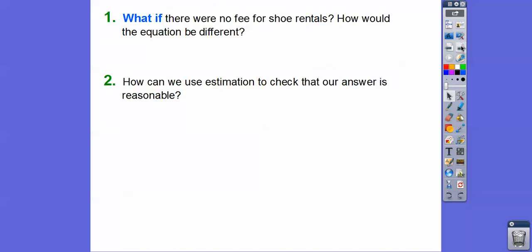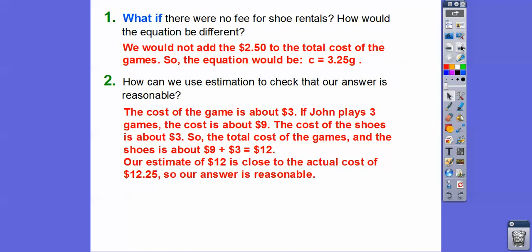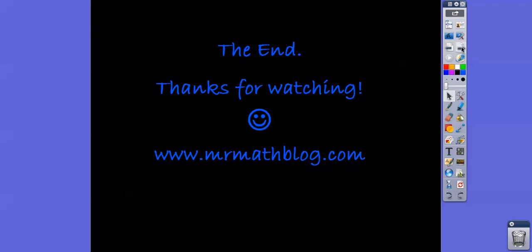What if there was no shoe rental fee? Then the equation would just be c equals 3.25 times g. To check our answer using estimation: $3.25 rounds down to $3, so three games costs about $9. The shoe rental of $2.50 rounds to $3. Total estimate is 9 plus 3 equals $12. Since $12 is close to our answer of $12.25, we know our answer is reasonable. Hope that makes sense — take care!